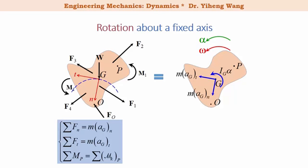The linear acceleration of point G, a_G, is also resolved in the normal and tangential directions. From the kinematics of rotation, the linear acceleration along the normal direction a_n equals omega squared times r, where omega is the angular velocity. The tangential acceleration a_t equals alpha * r, where alpha is the angular acceleration, and r is the radius from the axis of rotation to point G.